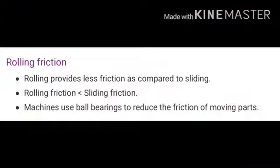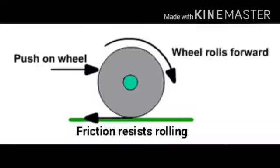Rolling provides less friction compared to sliding. Rolling friction is less than sliding friction. Machines use ball bearings to reduce friction of moving parts. The area of contact between the wheel and the surface is less during rolling, so less friction is applicable during rolling friction.